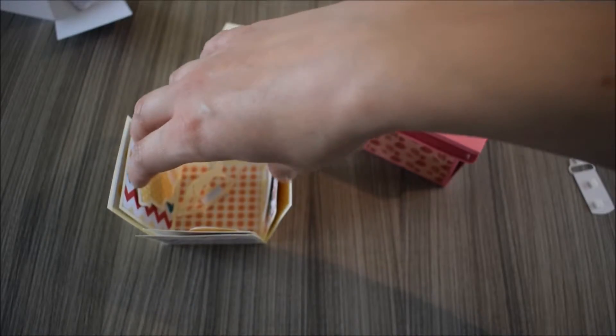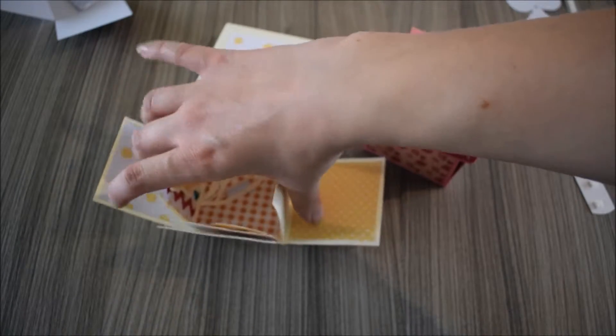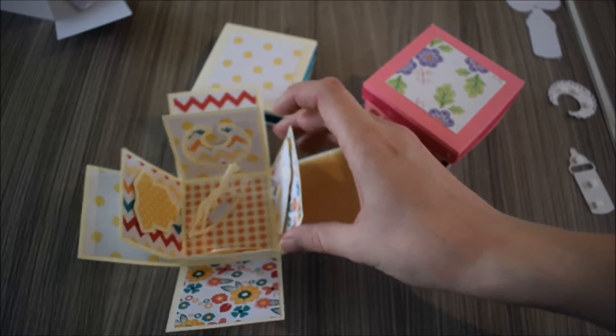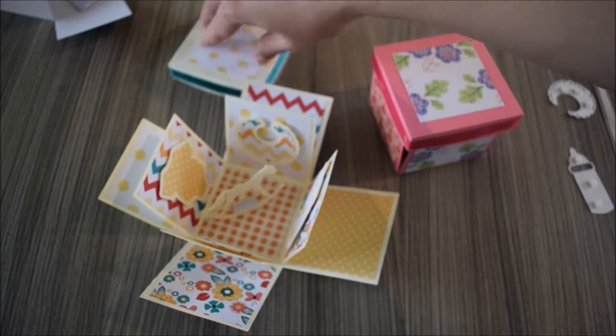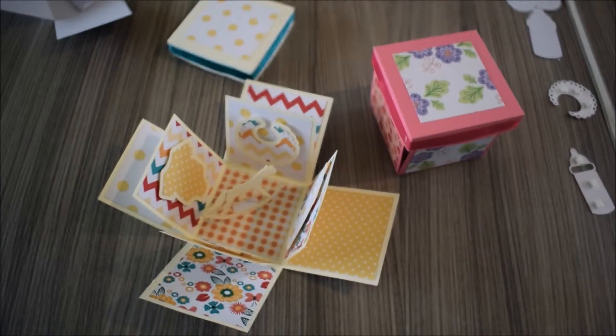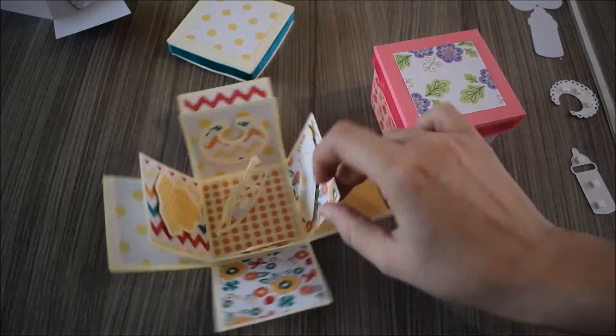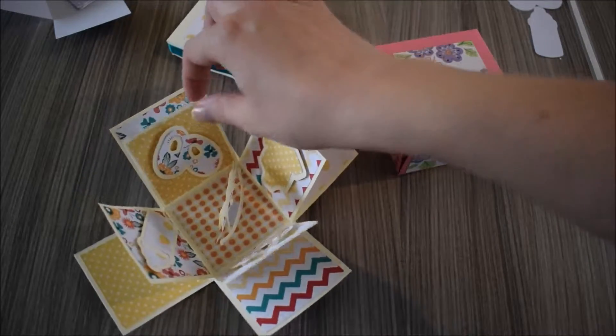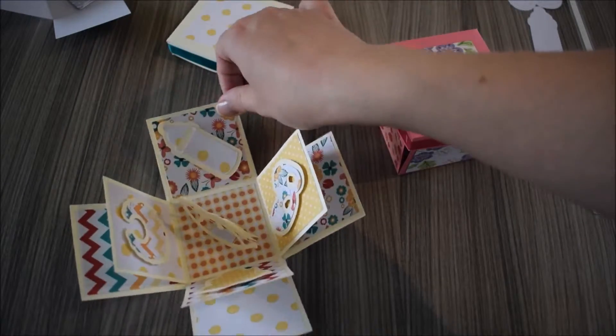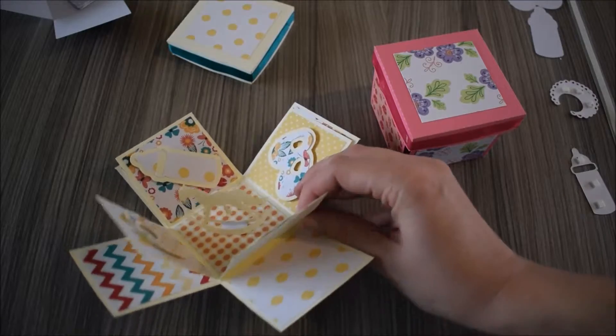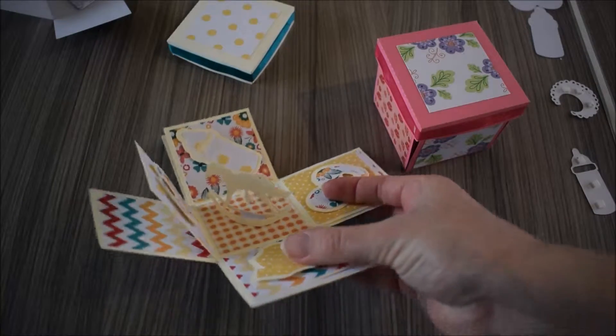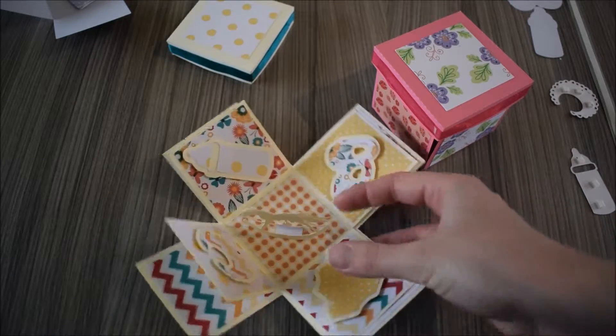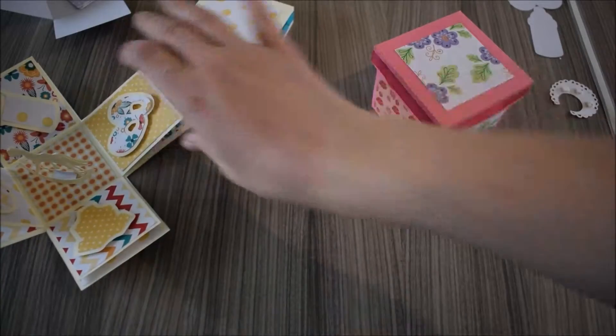There we go. So we have all the different colors and little baby bits—a bib, a onesie, little boots, and a bottle. And then in the middle we have a rocking horse. Okay, that's the yellow one.